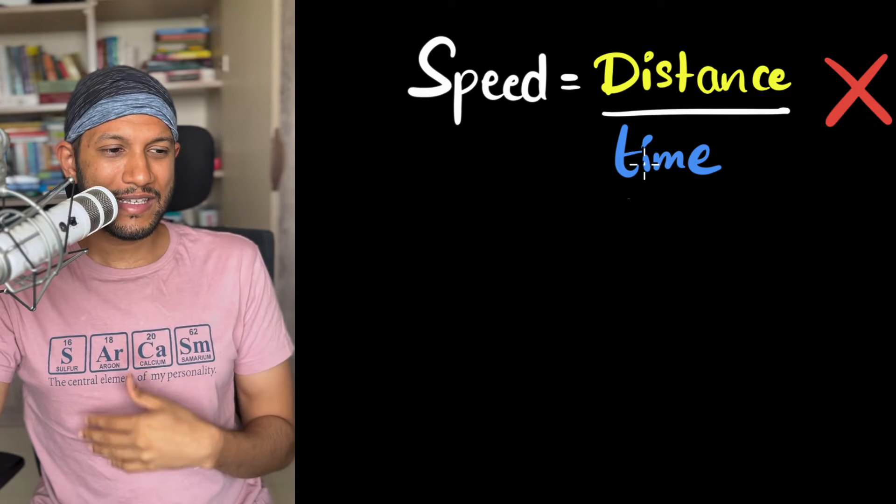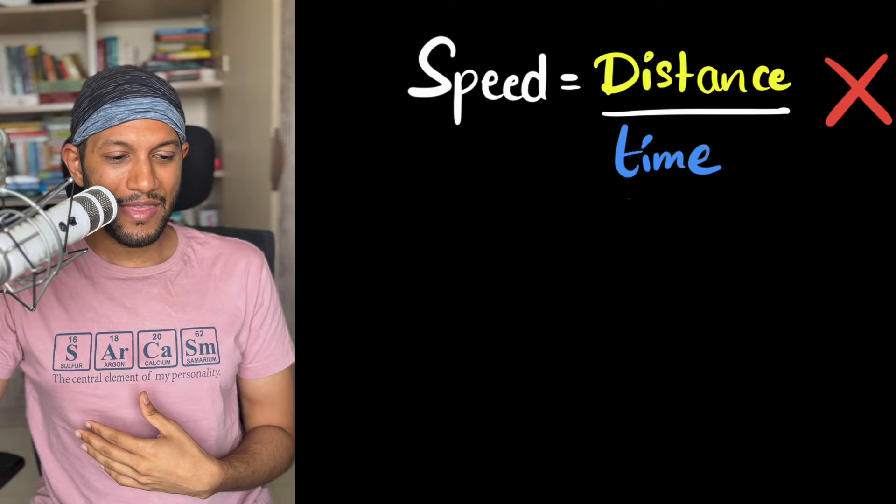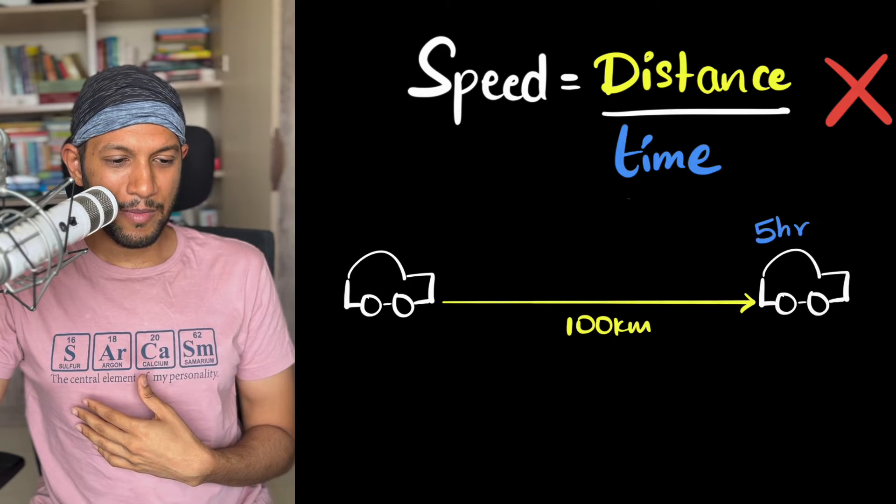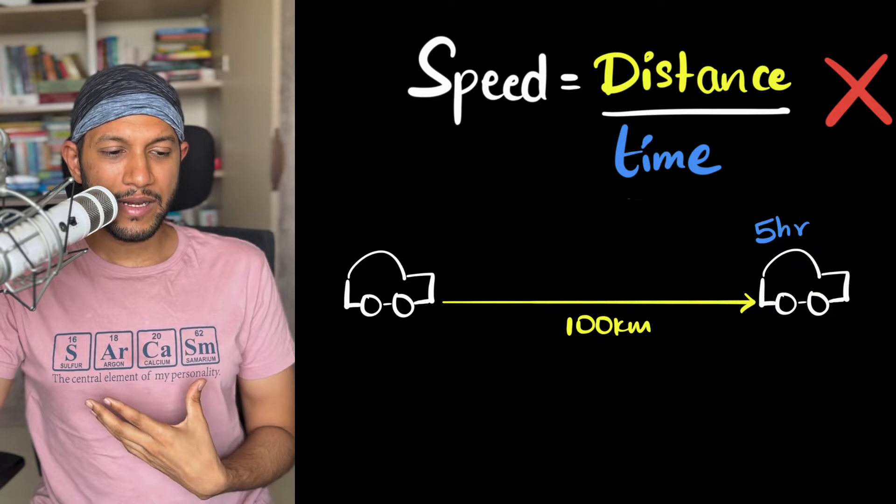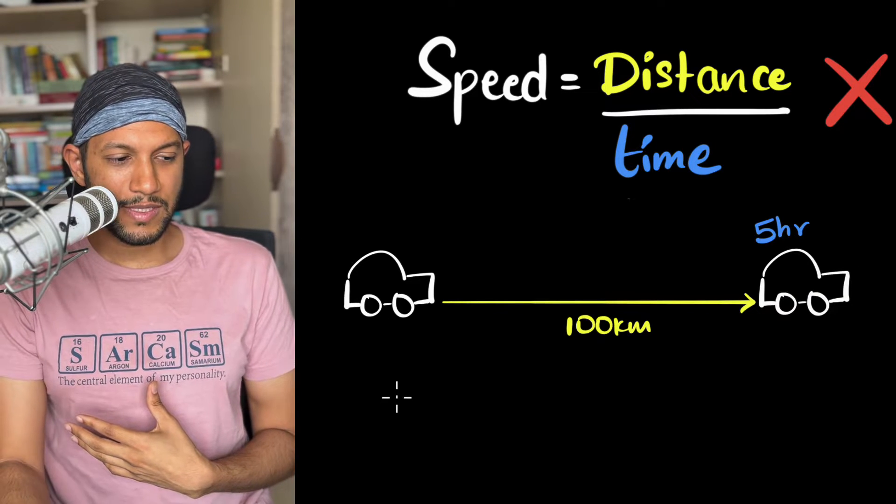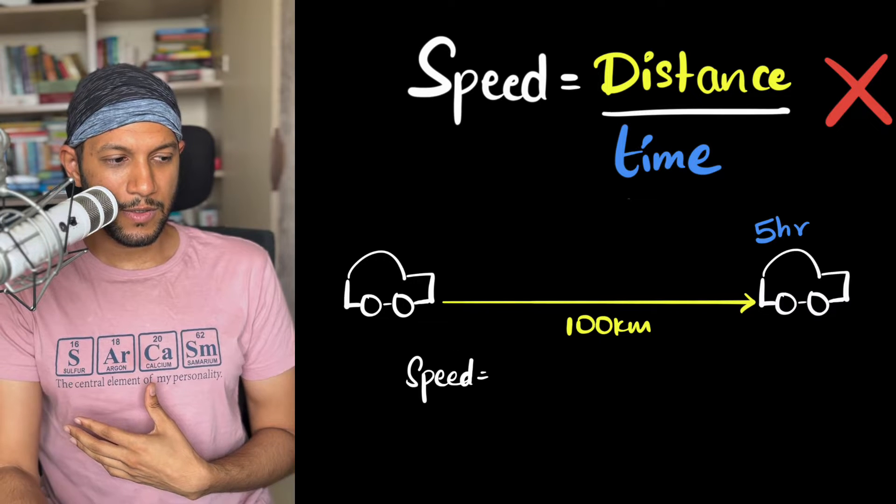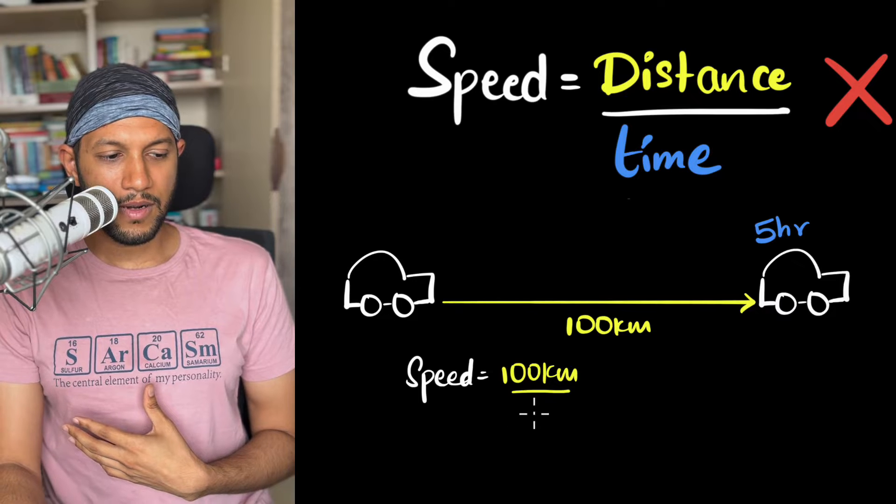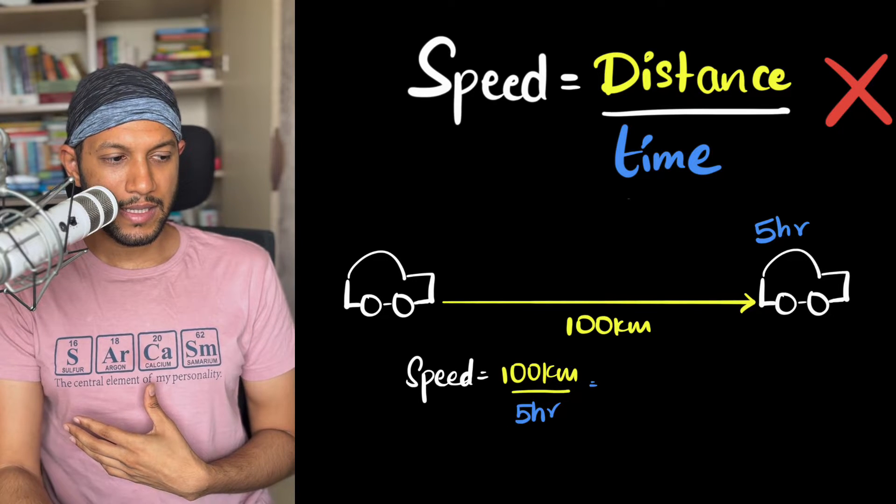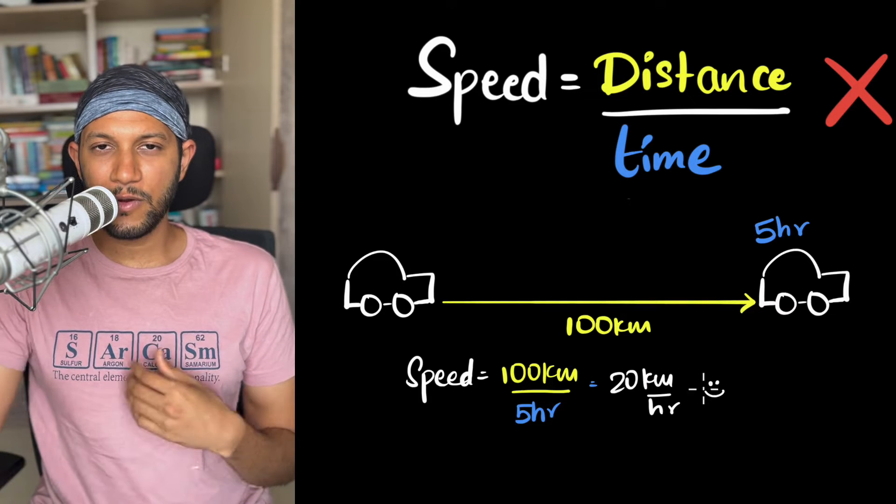Usually what happens is in lower grades we introduce the idea of speed and we say the formula is distance over time, and then we give problems like this. A car travels 100 kilometers and it does that in five hours. Calculate the speed. So we say speed equals distance over time, so speed is equal to 100 kilometers divided by 5 hours, and that gives us 20 kilometers per hour. Everybody is happy and then we go on to the next problem.